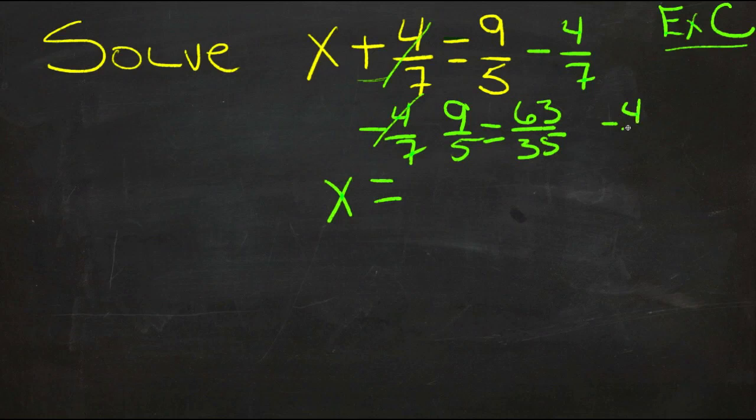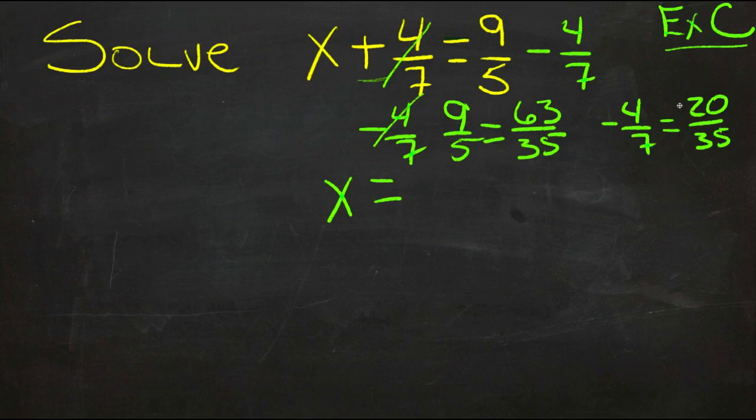And negative 4/7 would be the same thing as 35ths. 7 times 5 is 35. So 4 times 5 is 20. So negative 4/7 would be the same thing as negative 20/35.